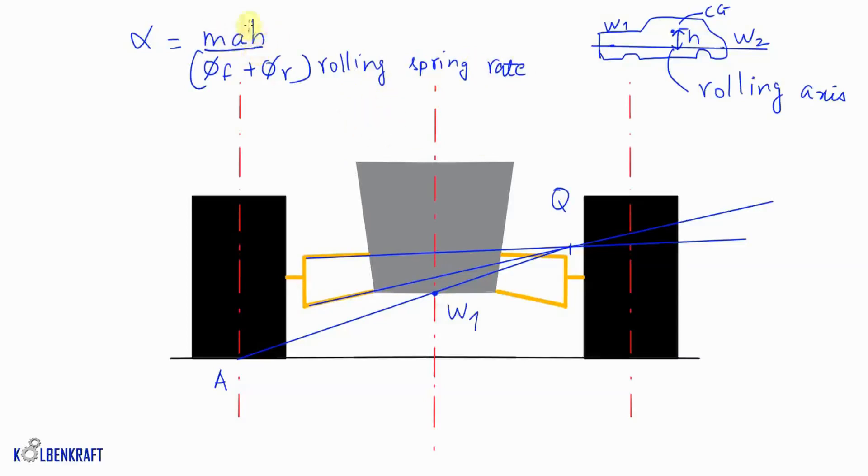And MAH is basically the moment which is created because of the lateral force. MA is the force and H is the distance between the CG and the rolling axis. So lateral force, the distance between the rolling axis and the center of gravity, and the rolling spring rate, these three factors will determine how much your vehicle will roll.